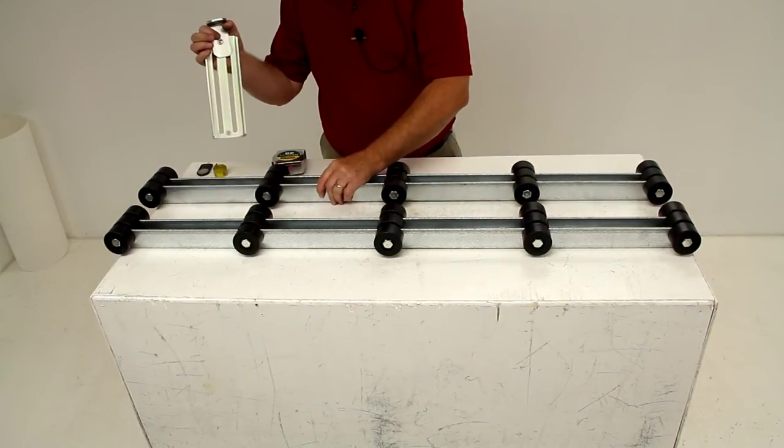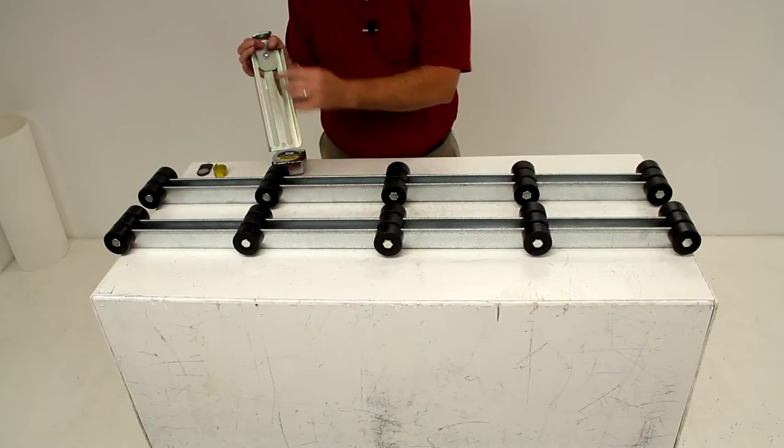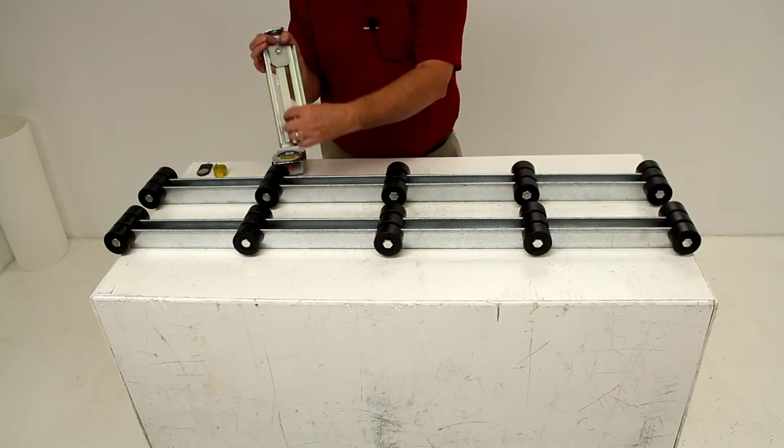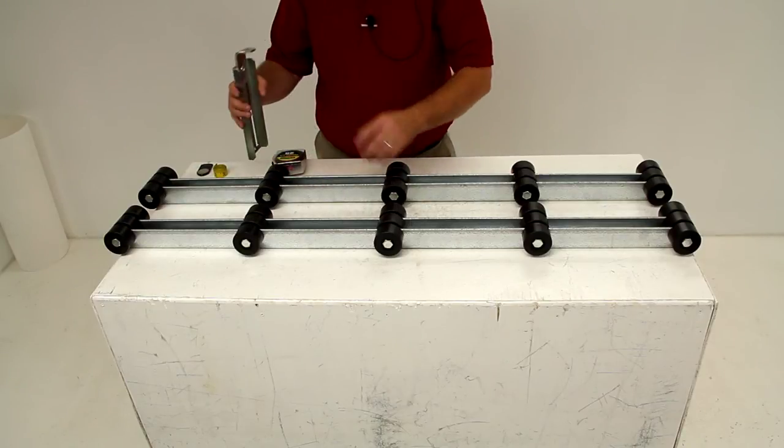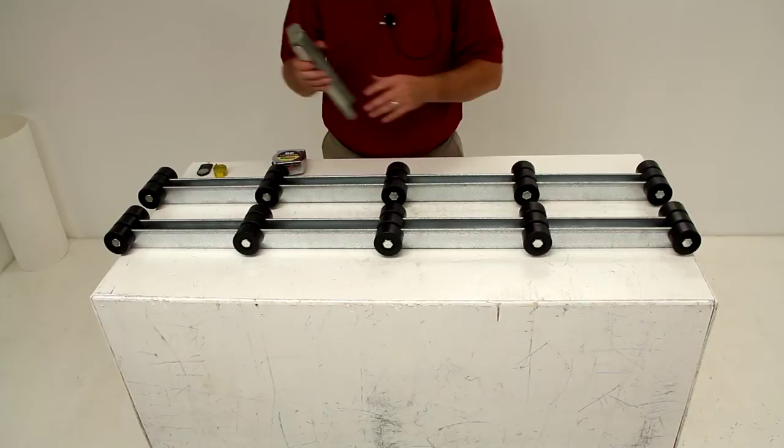This would attach to your trailer itself. It has two elongated holes which you can bolt to your trailer at whichever height you need. You do need two of these for each roller bunk.